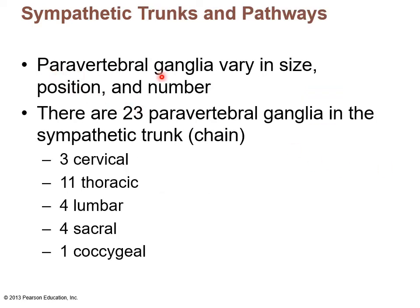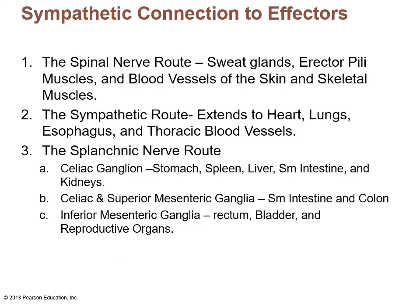These are called paravertebral ganglia. They vary in size, position, and number, but there are 23 paravertebral ganglia in the sympathetic trunk, all connected in a chain: three cervical, eleven thoracic, four lumbar, four sacral, and one coccygeal. Postganglionic neurons exit to various effectors: the spinal nerve root goes to sweat glands, erector pili muscles, and blood vessels of the skin and skeletal muscles; the sympathetic root connects to organs in the thoracic cavity such as the heart, lungs, esophagus, and thoracic blood vessels; and the splanchnic nerve root goes to organs in the abdominal and pelvic cavities.